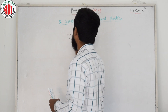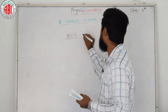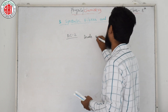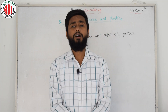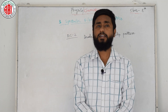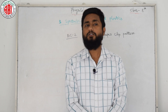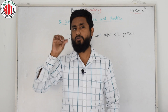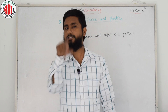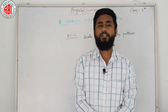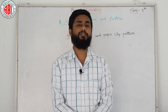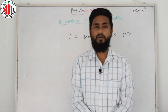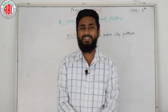Activity Number 2, heading: Beads and Paper Clip Pattern. Take a few paper clips as shown in figure 2b. Join them together as shown in figure 2c. Observe the pattern of the clips. Do you find any similarity between the pattern of beads in a necklace and the pattern of paper clips in a chain?